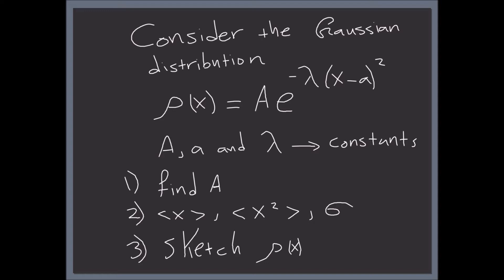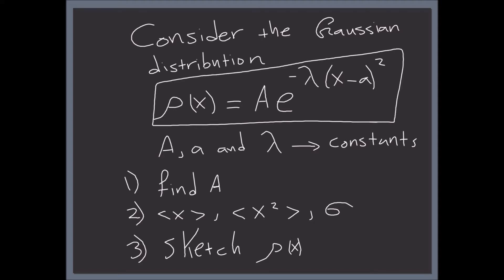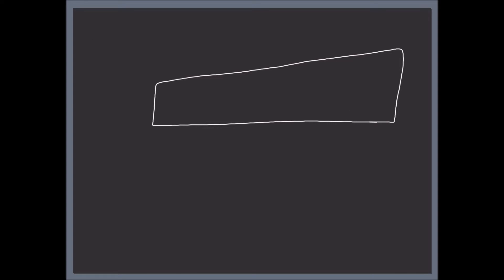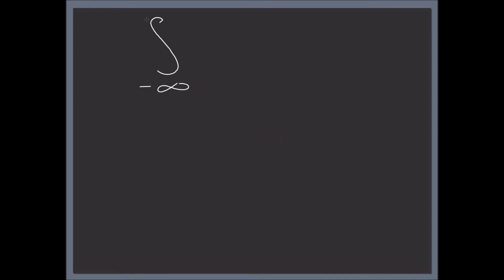First, we find A by normalizing this function. You normalize by taking the integral from negative infinity to infinity over all space of the function — A times e to the minus lambda times (x minus a) squared — and set it equal to one. That's how you normalize: integrate over all space and set it equal to one.